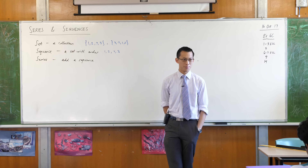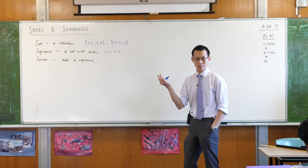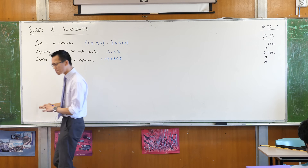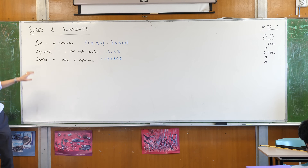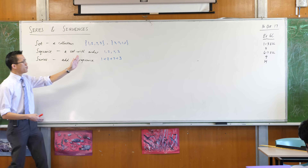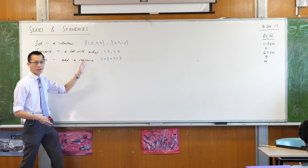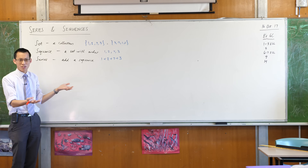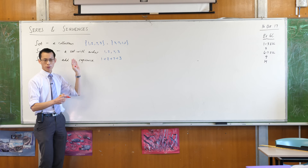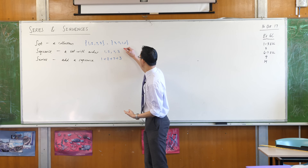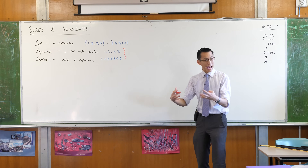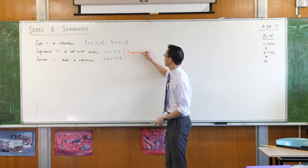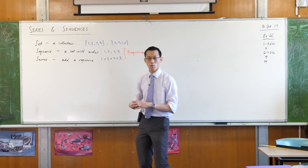How would I turn this into a series? Instead of writing commas, I'm just going to have plus signs — so 1 + 2 + 7 + 3. Now, since in each of these cases there's this idea of moving forward through the sequence or through the series — whereas with a set there's no forward or backward, no first or last part — we have a category that covers both of them. We call these progressions because you can progress from one term to the next.